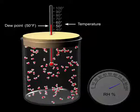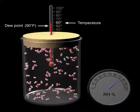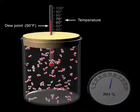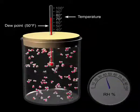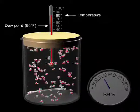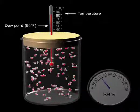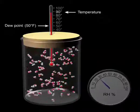As the temperature moves away from the dew point, the relative humidity lowers as the air moves farther away from being saturated.